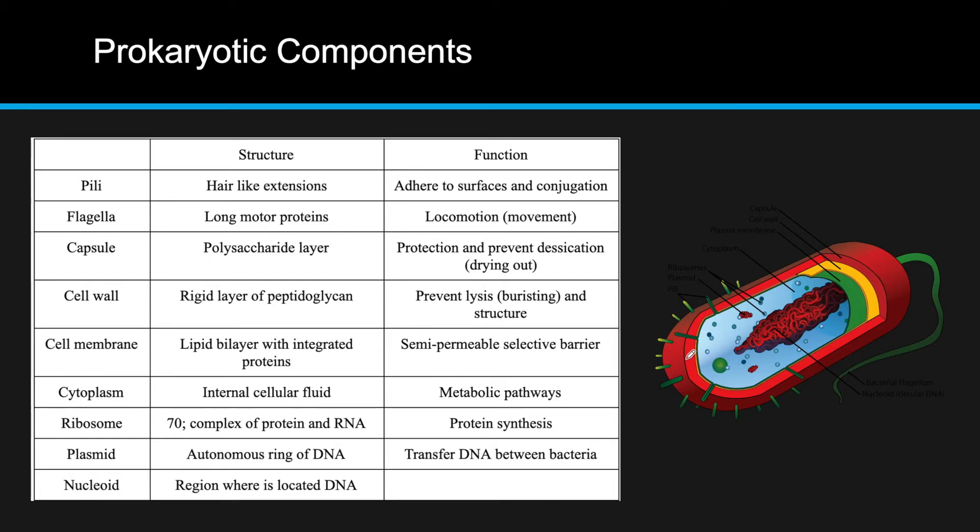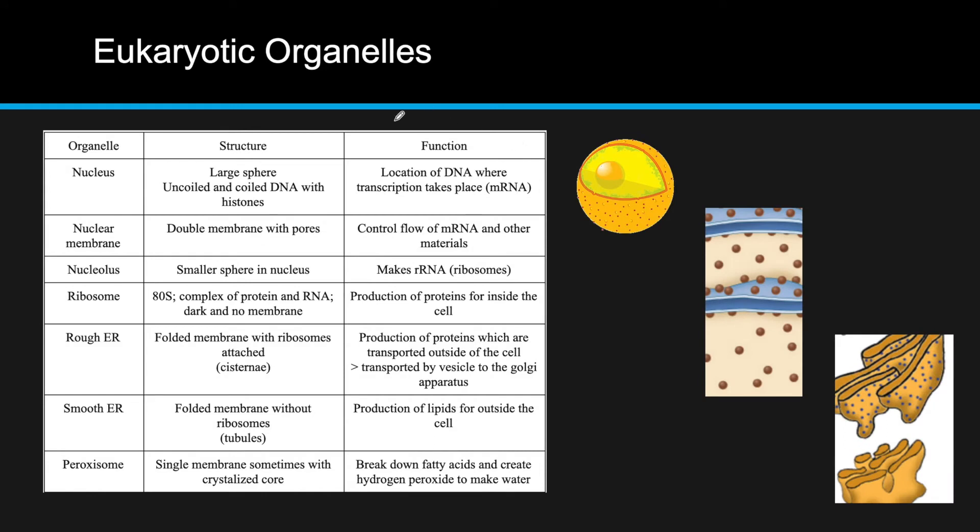So, as we move on here, cytoplasm. Cytoplasm is the liquid inside of the cell, where most, in prokaryotic cells, actually most metabolism chemical reactions occur. And then we have ribosomes. Now, these are smaller, the 70S ribosomes, they're smaller than eukaryotic cells, but still have the same job of protein synthesis. We have this plasmid, which is a little kind of ring of DNA, where the main DNA is located, and it's actually used for transferring to other bacteria. Finally, this large portion is known as the nucleoid, and it's where the main DNA for prokaryotic cells is located.